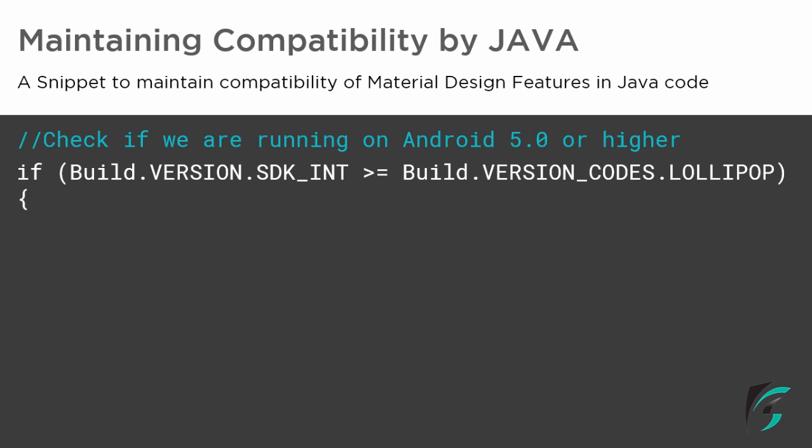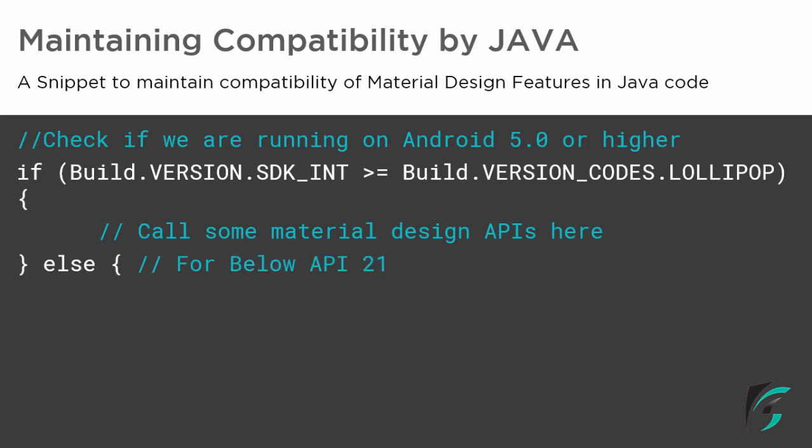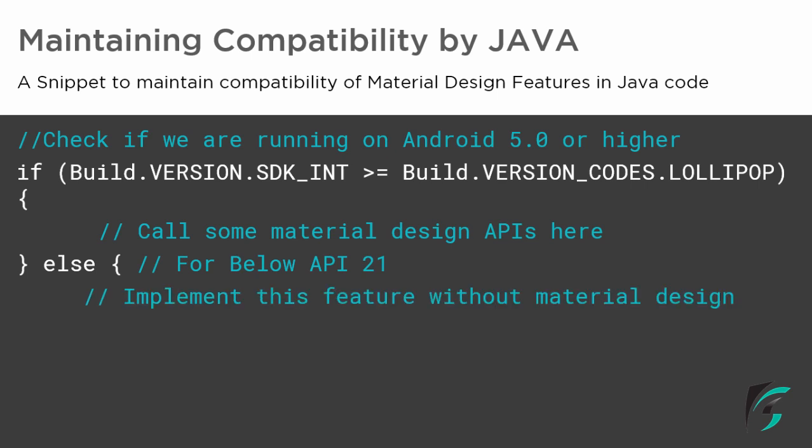If Build.VERSION.SDK_INT is greater than or equal to Build.VERSION_CODES.LOLLIPOP, we need to call the Material Design APIs, because Material Design features are only applicable for Lollipop and above. If the API level is below 21, the theme and various other features in our application have to be implemented without the Material Design feature.